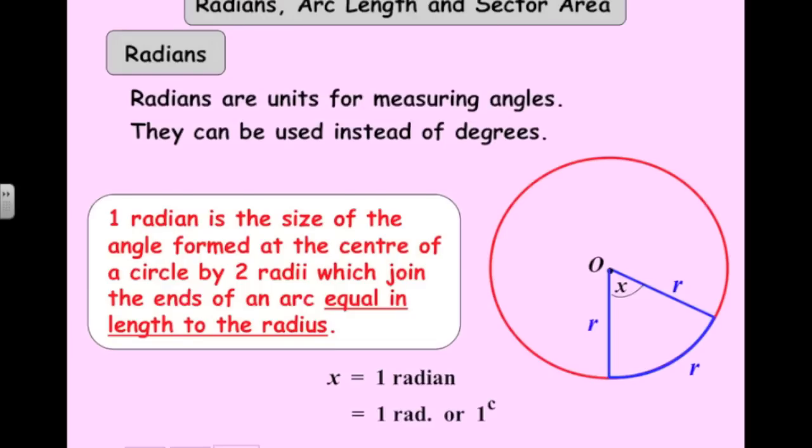Now radians have no units. A bit strange. So sometimes you might see 1 c or 1 with a little r at the top here to represent radians.